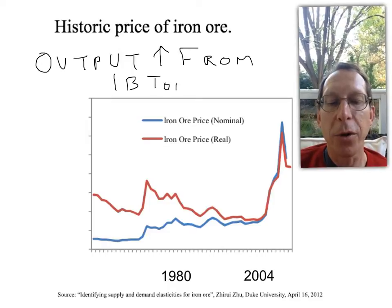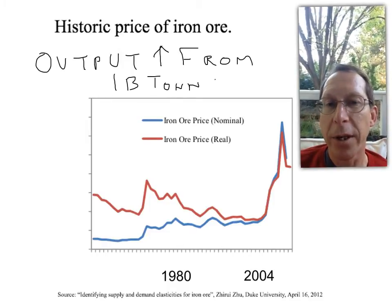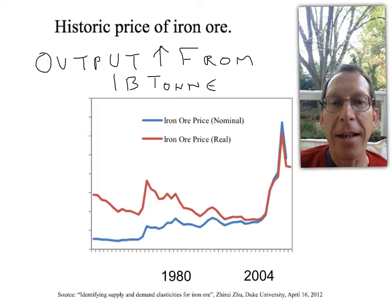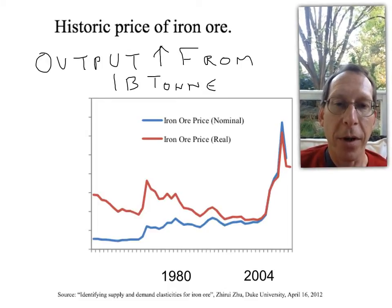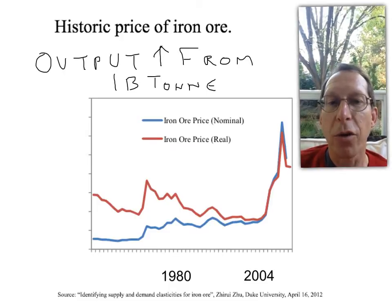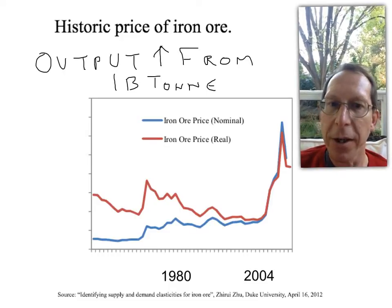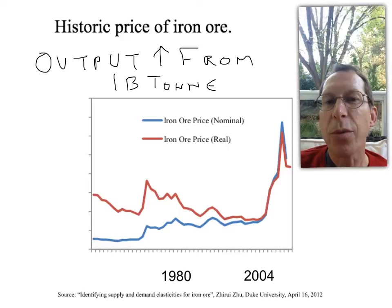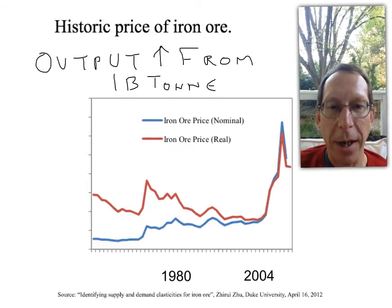It goes up to about two and a half billion tonnes in 2010 and it just keeps going. So production has risen throughout the 2000s and right up to today in 2015. So the price went up and down but output has kept going up.